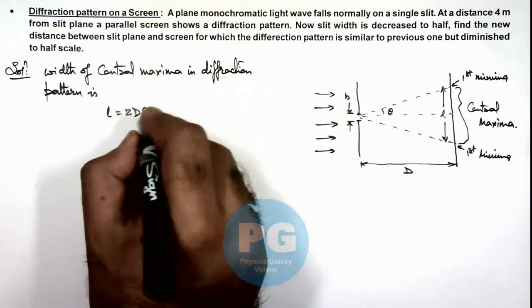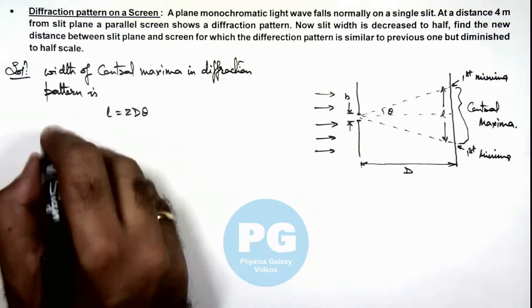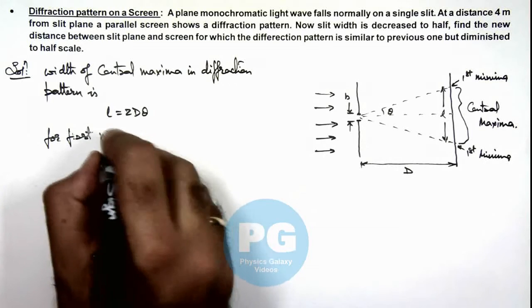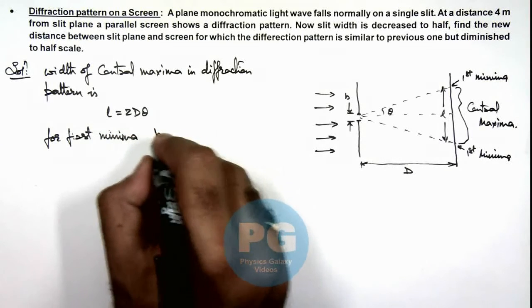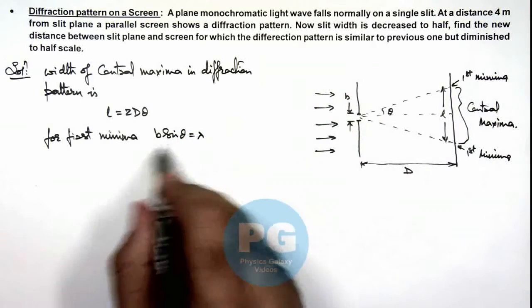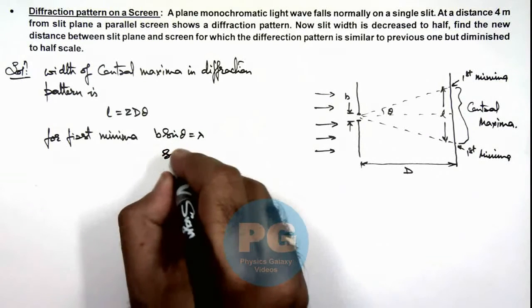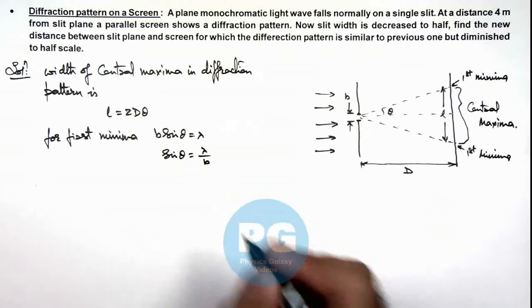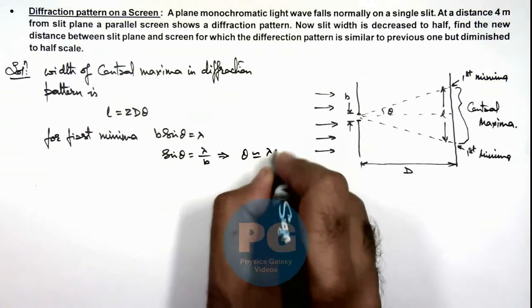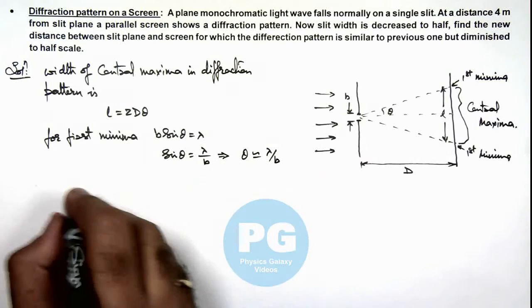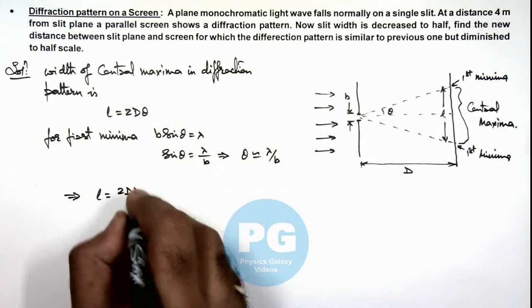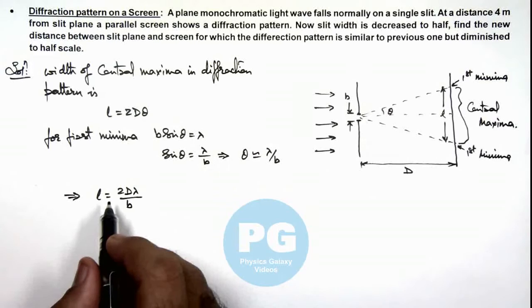And for first minima, we have already studied that the value of b sine theta is equal to lambda, and for higher order minima it will be b sine theta equals n lambda. So we are getting the value of sine theta is lambda by b. And in this situation we can write theta will approximately be equal to lambda by b for a small value of theta. So from here we are getting the value of l should be 2d lambda by b. This is the width of central maxima.